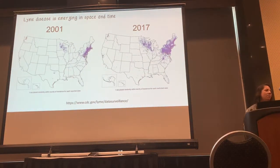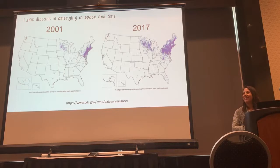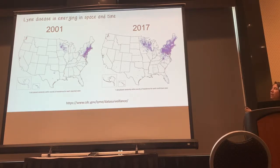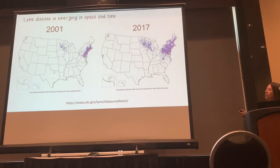Lyme disease is probably the most important, certainly the most prevalent vector-borne disease in the United States. It's also continuing to emerge. Since the 1970s, when it was first recognized, it definitely has been spreading, emerging in space and time. Just a comparison of 2001 to 2017, you can see it's a lot more prevalent in human cases. 95% of those cases are occurring in New England, in just seven states, but we're also continuing to see an expansion into the upper Midwest.